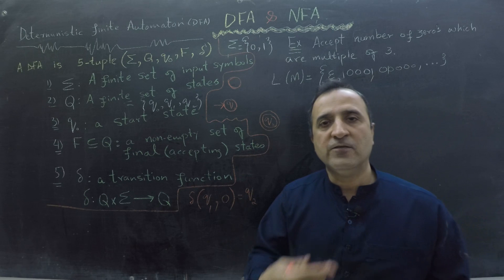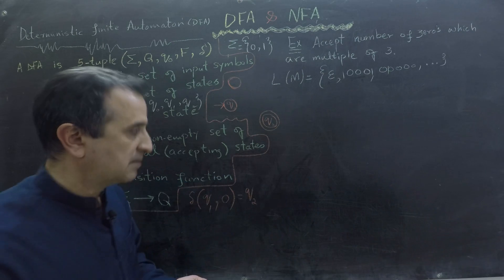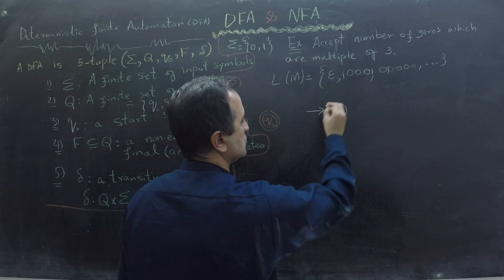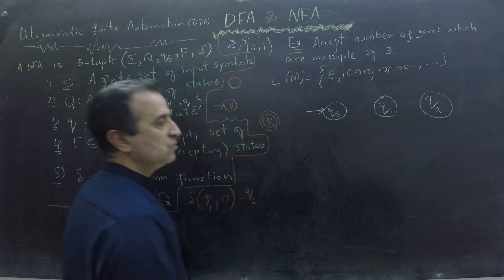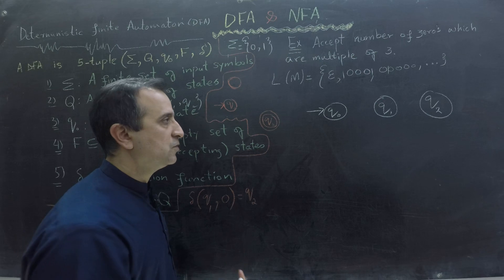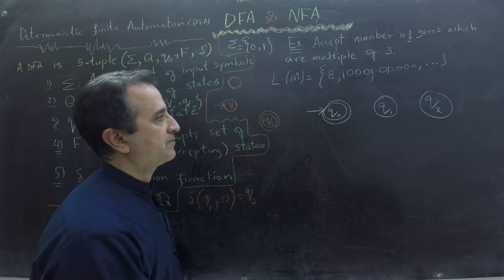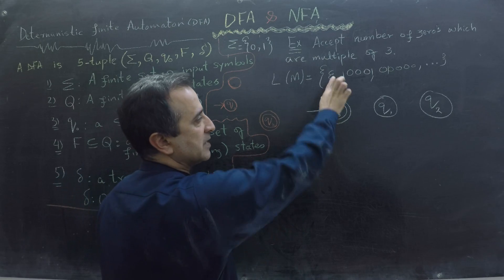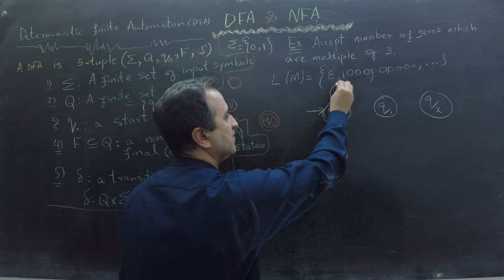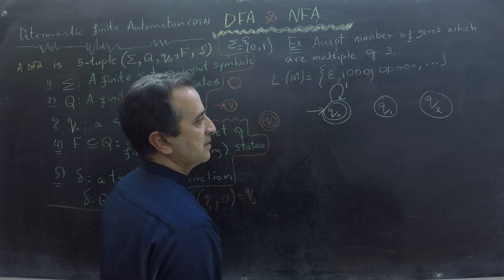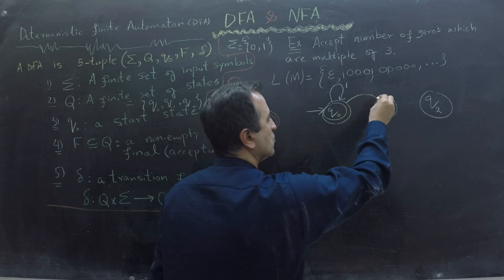Now let's create our DFA and discuss the transition function in more detail. For this example, I have three states: Q0, Q1, and Q2. Q0 is my start state and also my final state. The two circles represent it is a final state; the arrow represents it is a start state. My machine accepts the empty string, so the start state and final state are the same. If I get a 1, I stay at this state; if I get a 0, I go to state Q1, because I must accept multiples of three zeros.